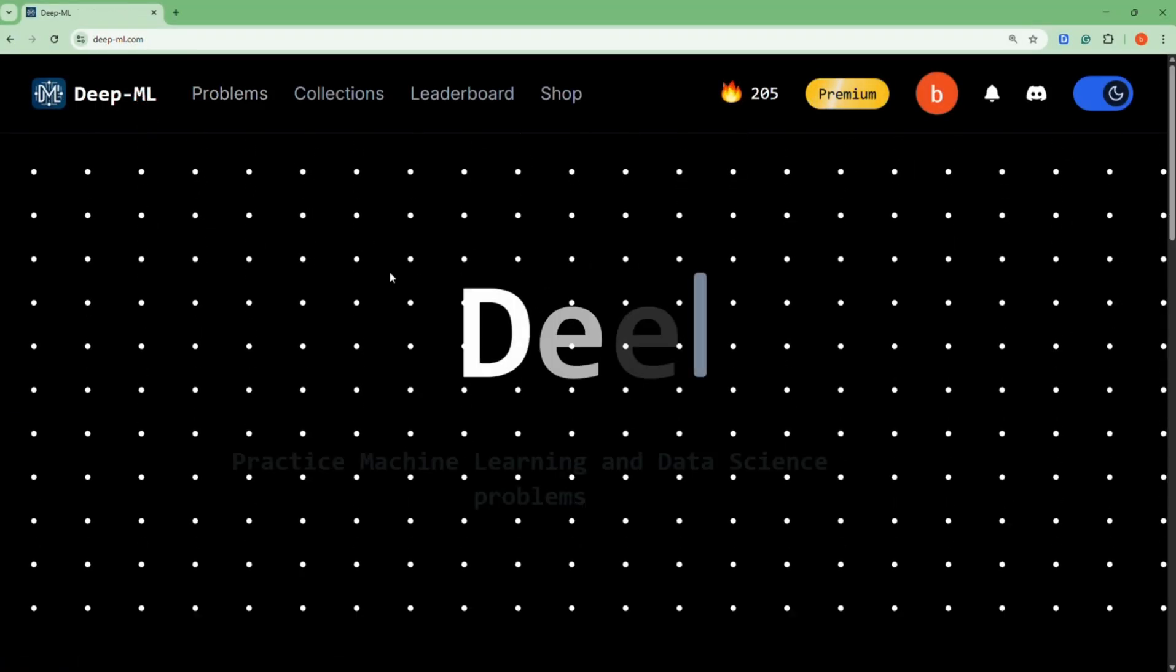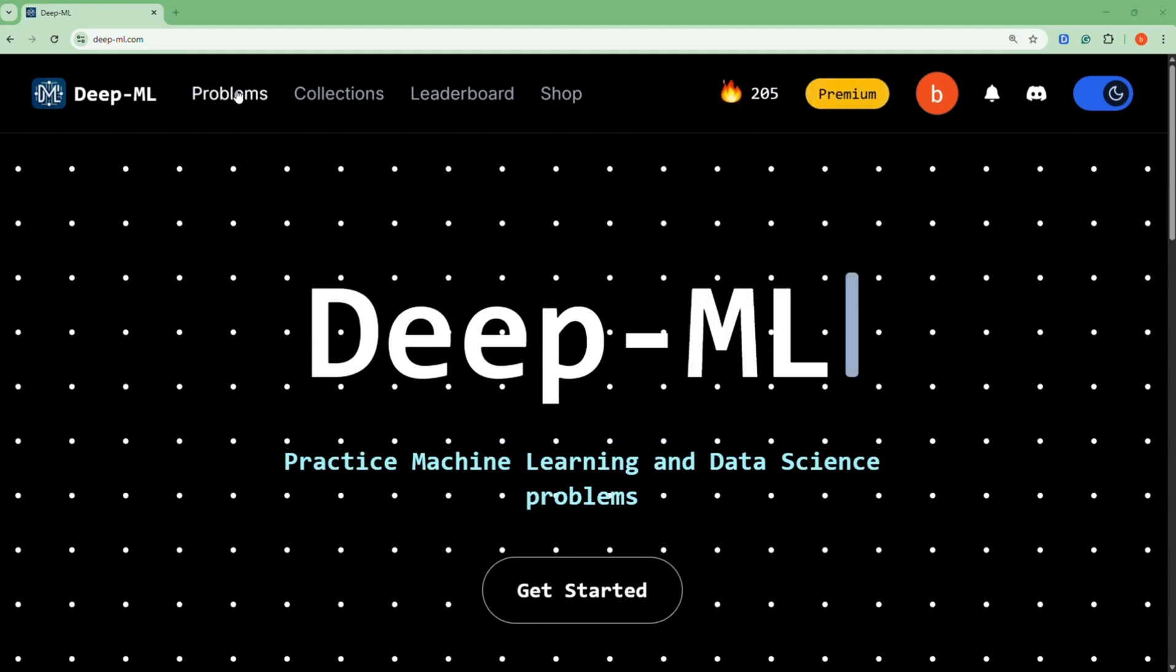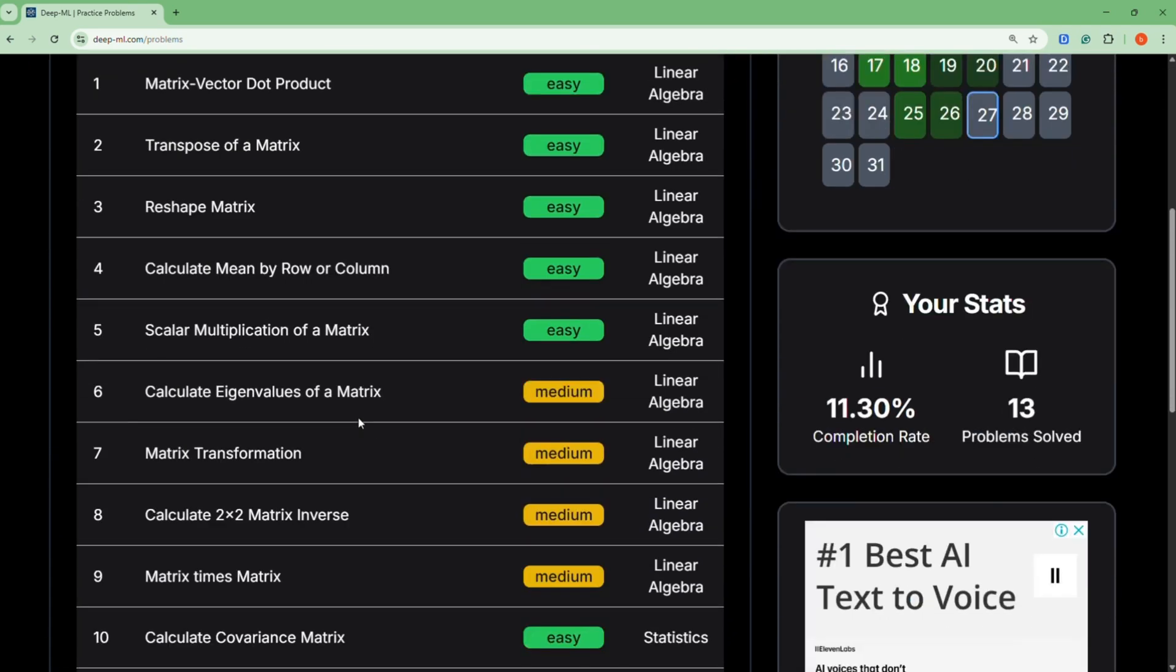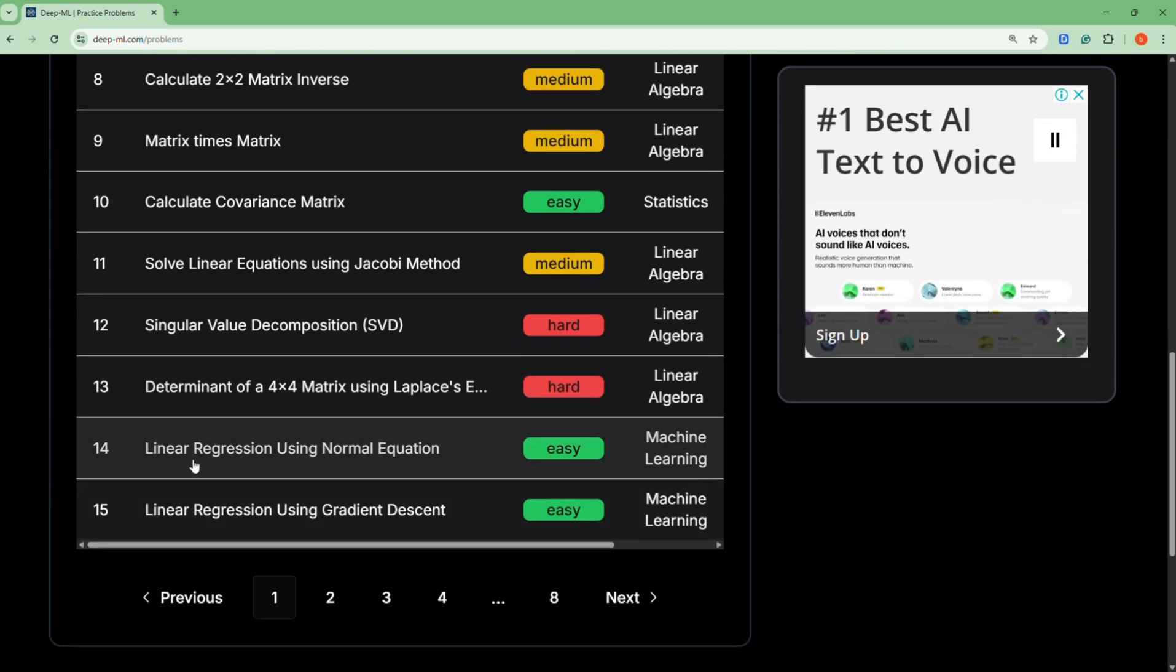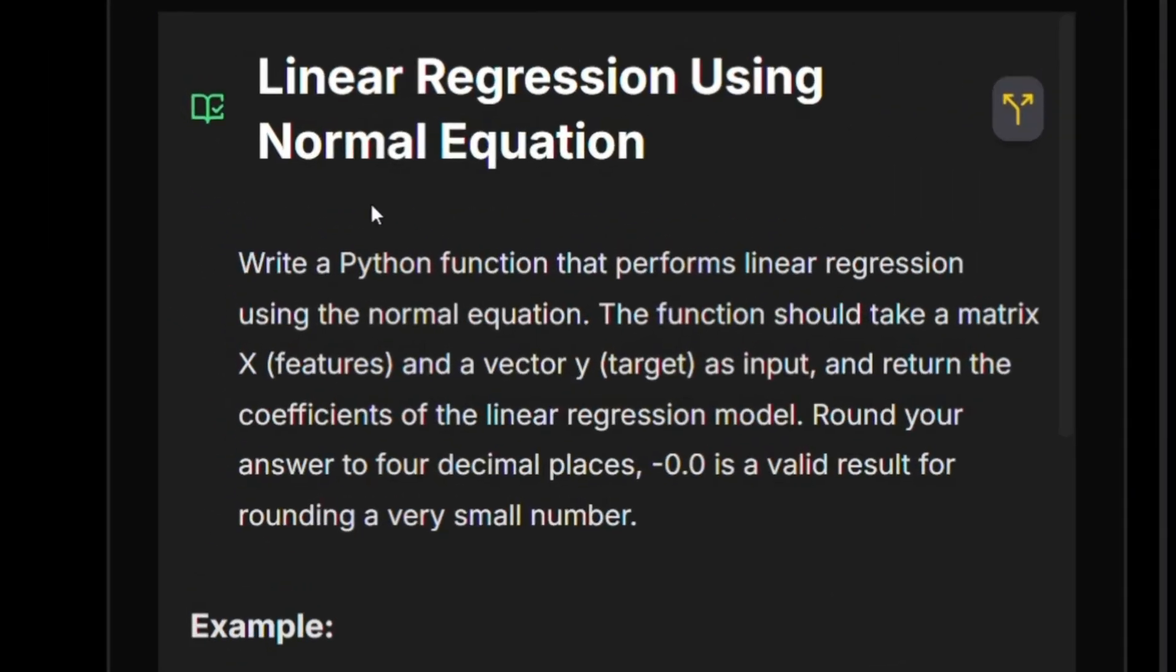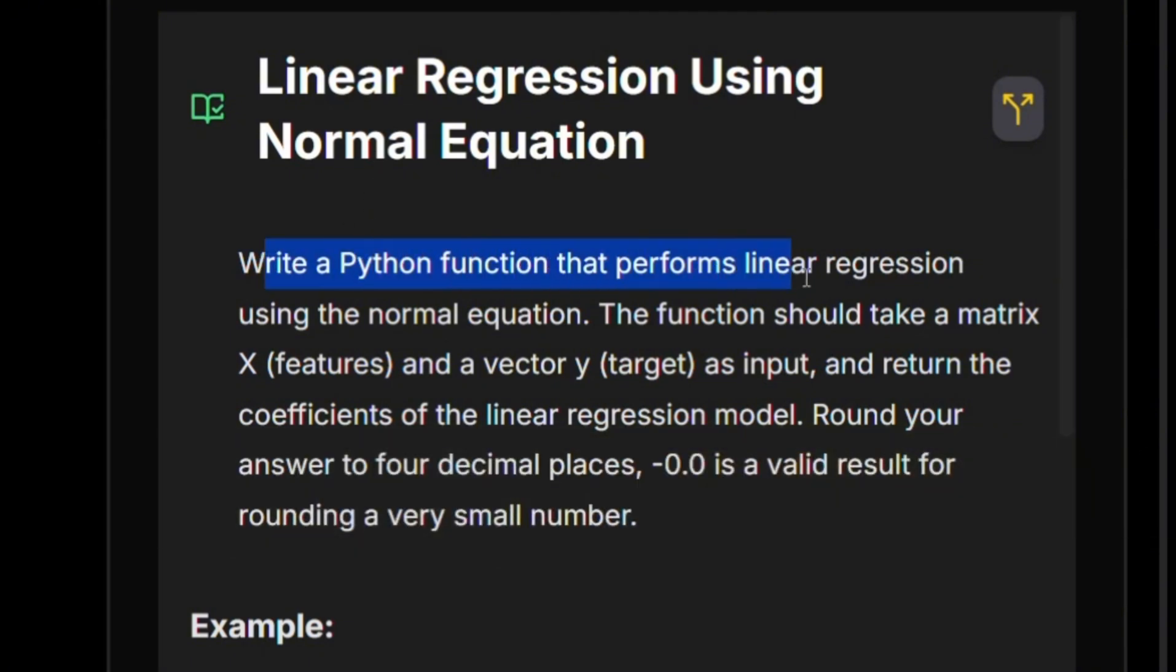So we're here in deepml.com, and what we're going to do today is look at problem number 14. It's down over here in the first page, linear regression using normal equations. Let's read the problem together. We need to write a Python function that performs linear regression using the normal equation. The function takes in a matrix X of features and a vector y as the target.